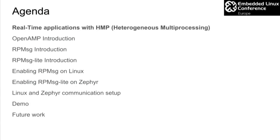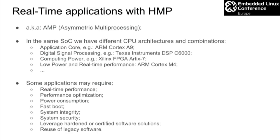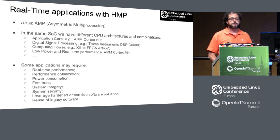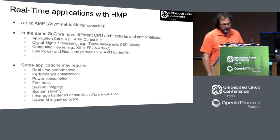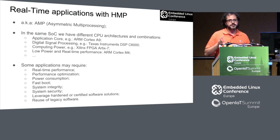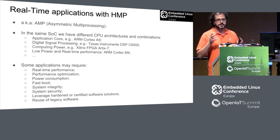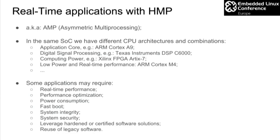Let's talk about real-time applications in HMPs — also known as hybrid multiprocessing or asymmetric multiprocessing. The idea is that different CPU architectures and combinations can be found in the same SoC, like application cores with Cortex-A, DSPs, FPGAs, low-power and real-time performance cores like Cortex-M4, or graphics acceleration, video encoding and decoding.